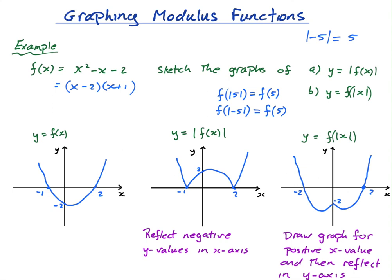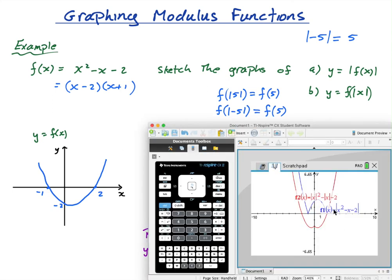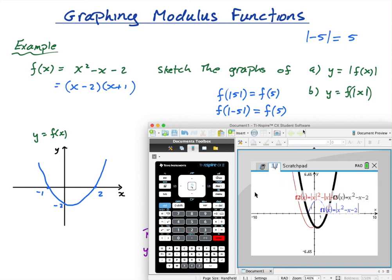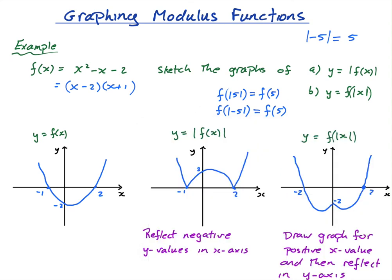I press enter and there it is — close enough to my hand-drawn version. To compare, let me also draw the original x squared minus x minus 2. You can see the red graph follows the black graph for the positive x-values, and then it just reflects in the y-axis. Next lesson we'll be solving equations with modulus functions.